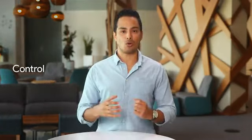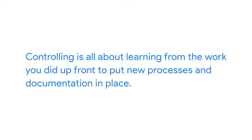The last step of this cycle is control. You've gotten the process and project to a good place, and now it's time to implement it and keep it there. Controlling is all about learning from the work you did up front to put new processes and documentation in place, and continue to monitor so the company doesn't revert back to the old, inefficient way of doing things.